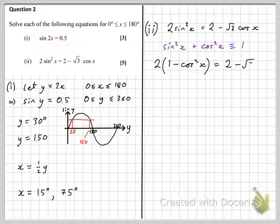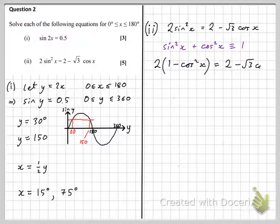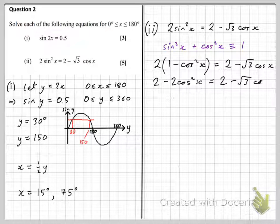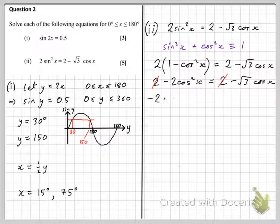I've done nothing to the right-hand side of the equation at the moment. It's still 2 minus root 3 cos x. But now if we expand the left-hand side, and then notice that we've got a plus 2 on both sides, which we can cancel.